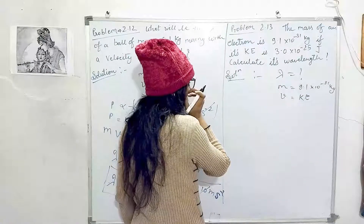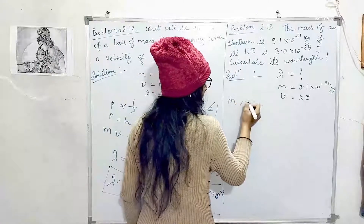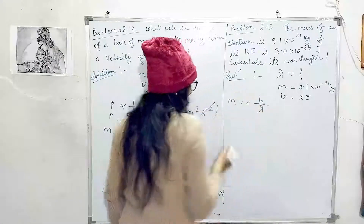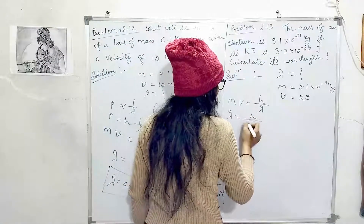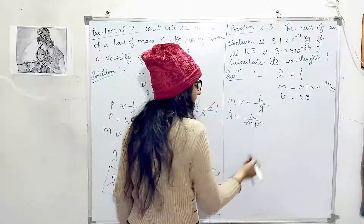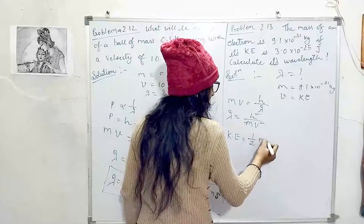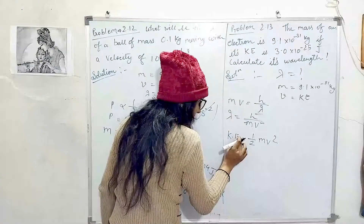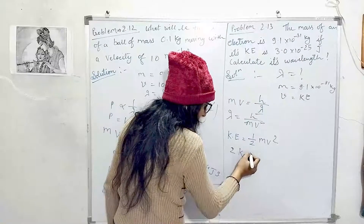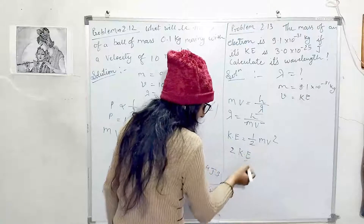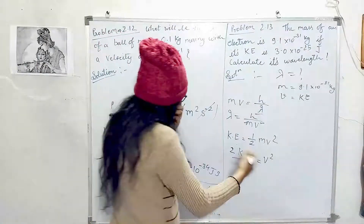The formula we will use is mv = h divided by lambda, so lambda = h divided by mv. We know h and m, but we need to find velocity. Kinetic energy is (1/2)mv². Rearranging to find velocity: v² = 2 × KE / m, so v = √(2KE/m).